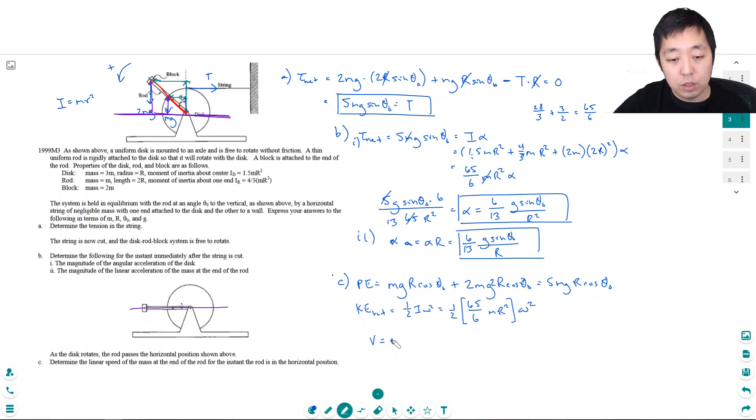Now I can set these equal to each other and solve for omega. But what I'm actually looking for is the linear speed. So V, the linear speed of the mass at the end of the rod, is equal to R omega. R in this case, he wants the linear speed at this guy at the end, his distance is 2R omega. So omega is equal to V over 2R, which I can then plug into here and then solve for V. So I get this is equal to 1 half 65 over 6 MR squared times V squared over 4R squared, because I just square this.